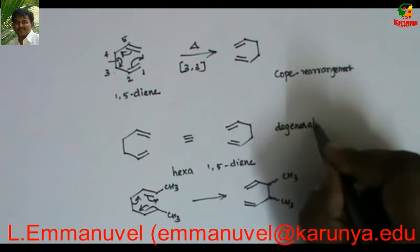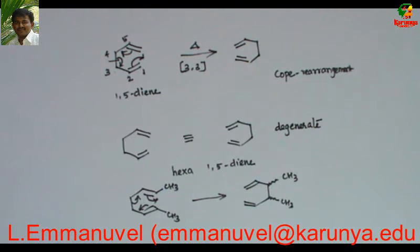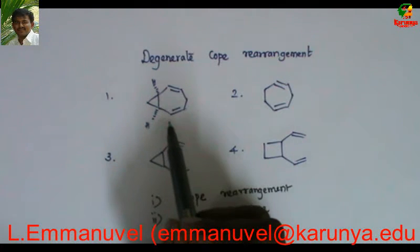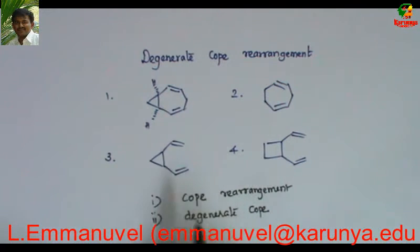It is cope rearrangement in which both the starting material and product are same. They are known as degenerate cope rearrangement. Let us try the cope rearrangement in all the given options. And we have to check in which we get the same starting material as product.